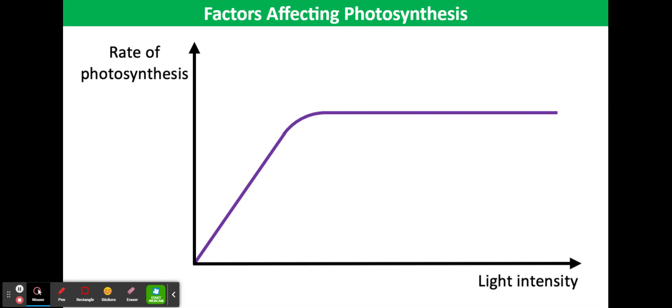When light intensity is low, the rate of photosynthesis is low. As light intensity increases, the rate of photosynthesis increases. At a certain point, even when light intensity increases, the rate of photosynthesis does not increase, as shown in the graph in front of you.